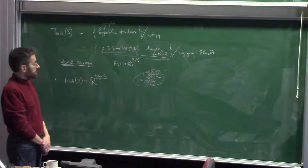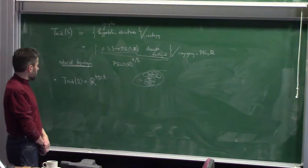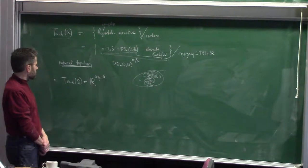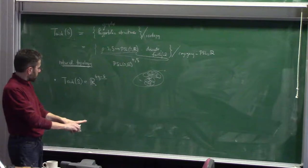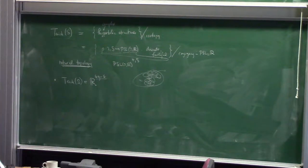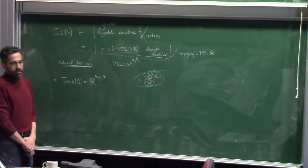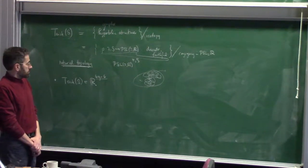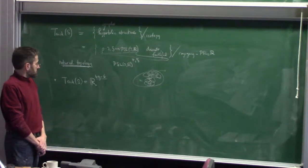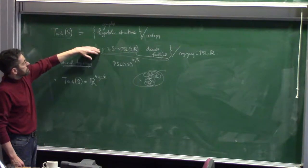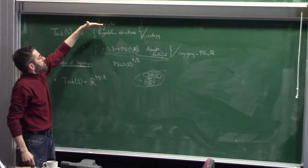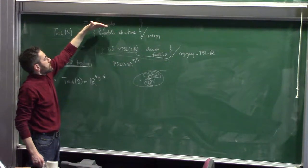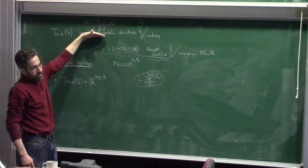Bill Goldman calls this Fricke-Klein space. The distinction is between the real analytic version of the space where you have real coordinates and hyperbolic structures — that's what Bill calls Fricke-Klein space — versus the complex structure version, which is what was historically called Teichmüller space. The original historical thing was the complex structure as Teichmüller space, and Bill likes to think of the hyperbolic structure version as Fricke-Klein space.